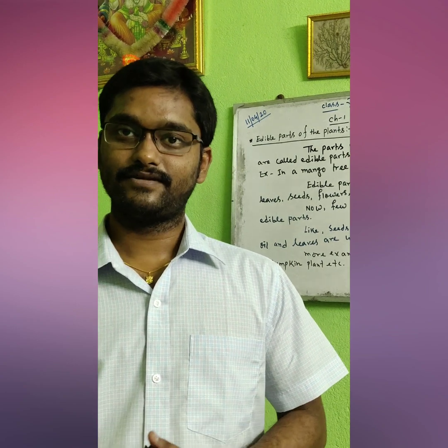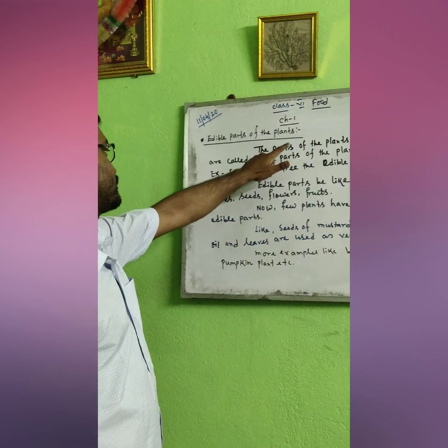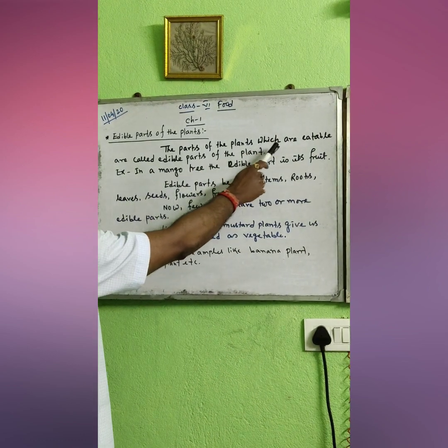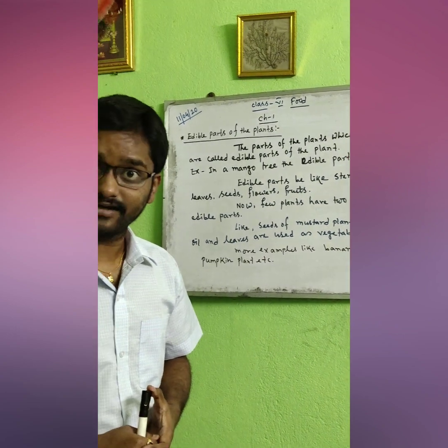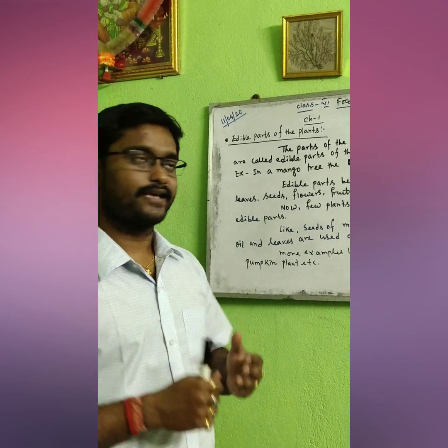We are going to the first chapter about food. The next part is edible parts of the plants — this is the second main keyword. Edible means eatable; both are the same. The parts of a plant which we can eat are known as edible parts of the plant. I have already written this on the board.